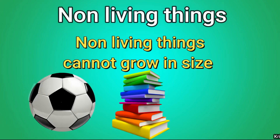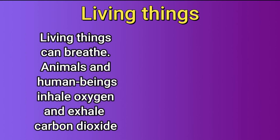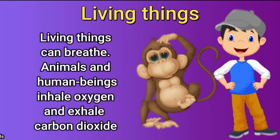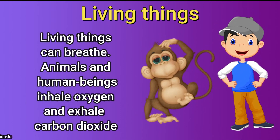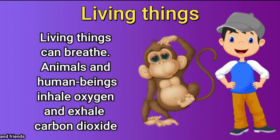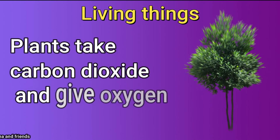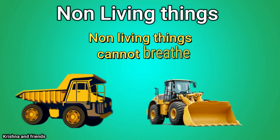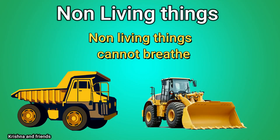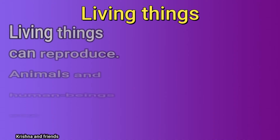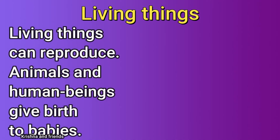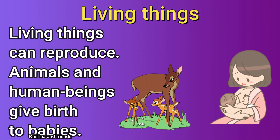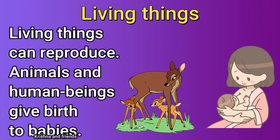Living things can breathe. Animals and human beings inhale oxygen and exhale carbon dioxide. Plants take carbon dioxide and give oxygen. Non-living things cannot breathe. Living things can reproduce — animals and humans give birth to babies.